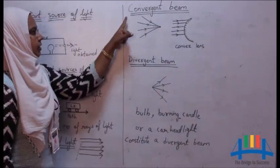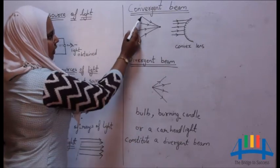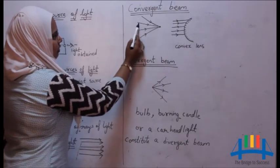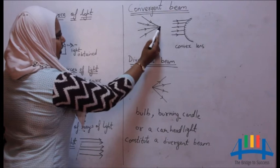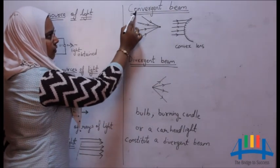The next term is convergent beam. The rays of light coming from different directions, if they meet at a point, that is called convergent beam of light.